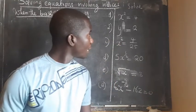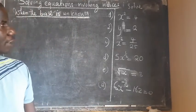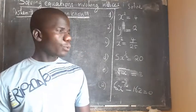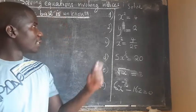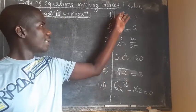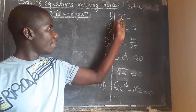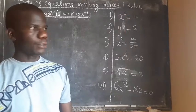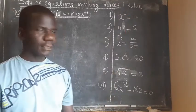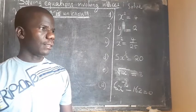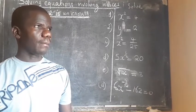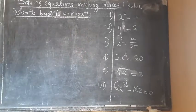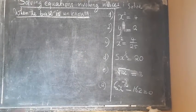I'm presenting another part of index notation. Now we are looking at how to solve equations involving index notation when the base is unknown. Throughout these examples the base is unknown — how do we solve such equations? So without wasting time, let's begin to look at the first one.